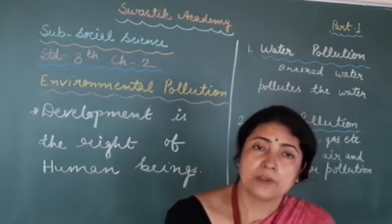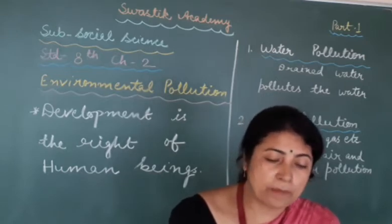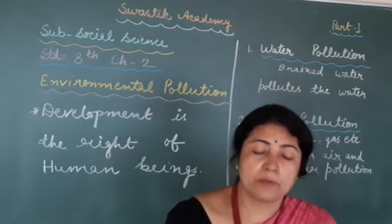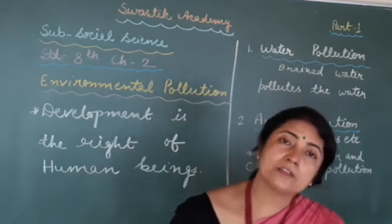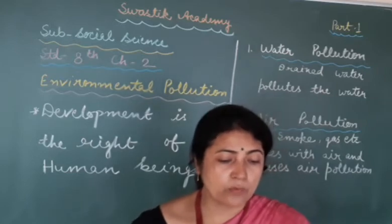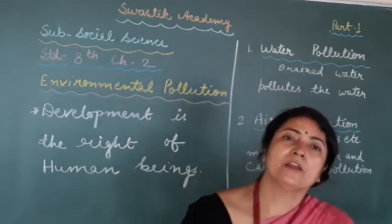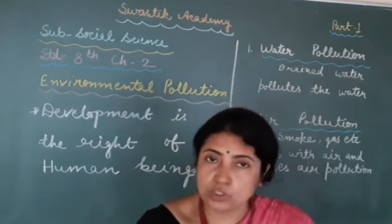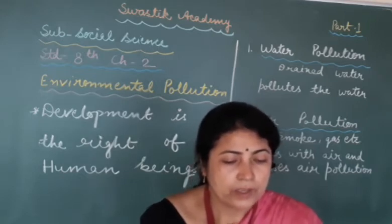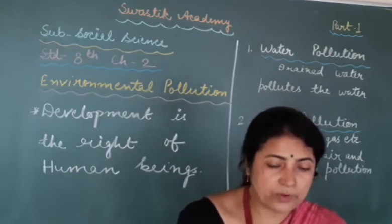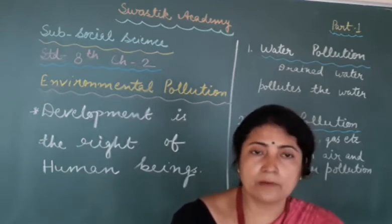The water from drains in urban areas is poured into rivers and ponds, which creates the problem of water pollution. Many urban drains, canals and channels pollute the water. Today's rain water is also polluted. The dirty water that comes out from industries and factories is poured into rivers. This also destroys aquatic life living in the water.